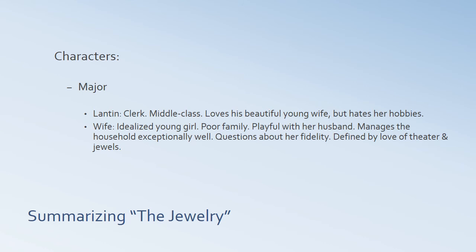The major characters: first, there's Lantan, who is a clerk — a middle-class job involving copying documents for lawyers. He loves his beautiful young wife but hates her hobbies, particularly going to the theater and buying fake jewelry. The wife — we don't get a name for her — is idealized. We know from the beginning she's beautiful, everyone thinks she's the perfect young woman, and she comes from a poor family. She's very playful with her husband and manages the household exceptionally well. However, after she dies, there are questions about her fidelity — where did she actually get this jewelry? Her defining characteristic is her love of the theater and the fake jewelry.